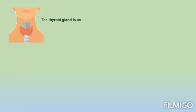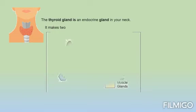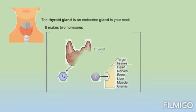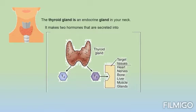What is the thyroid gland? The thyroid gland is a gland situated at the level of your neck. Keep in mind that this gland is an endocrine gland. It makes two hormones called T3 and T4, and these hormones are directly secreted into the bloodstream.